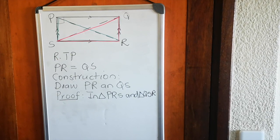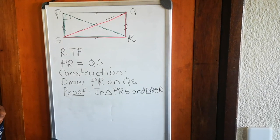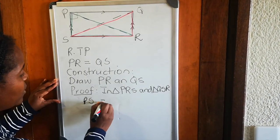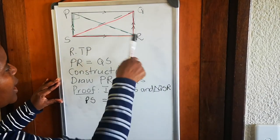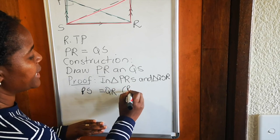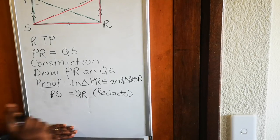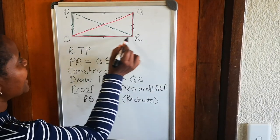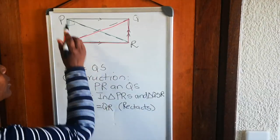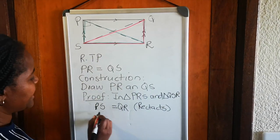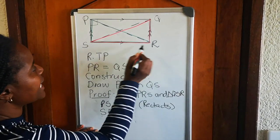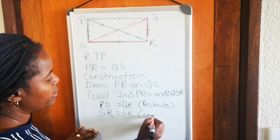Now, what do we know about these triangles? Looking at the green triangle and the red triangle: PS in the green triangle is equal to QR in the red triangle. Why are they equal? Because it is a parallelogram — opposite sides of the rectangle are equal. Next, SR in the green triangle equals SR in the red triangle, and that line is common — it's a common line.